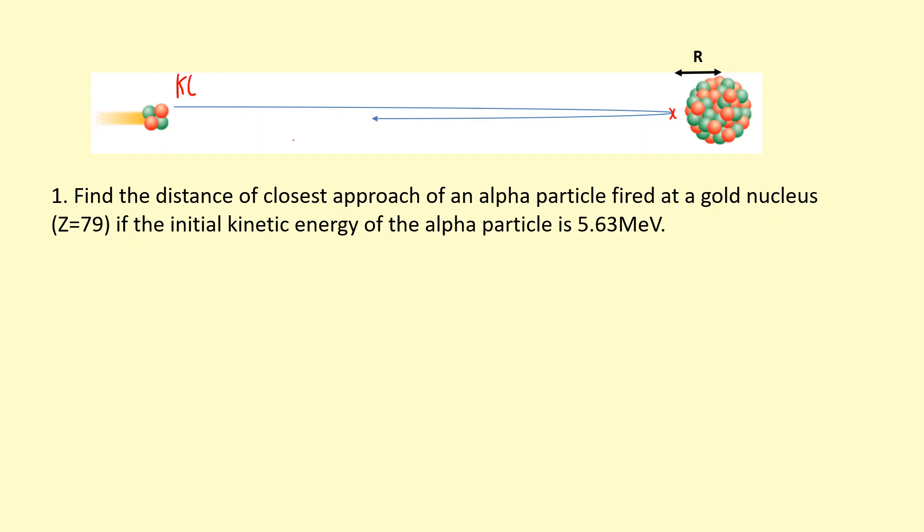So the alpha particle does have kinetic energy at the beginning. And as it gets closer, this is going to decrease, and eventually it's going to stop because the particle stops. So this is because all the energy has turned to electric potential energy.